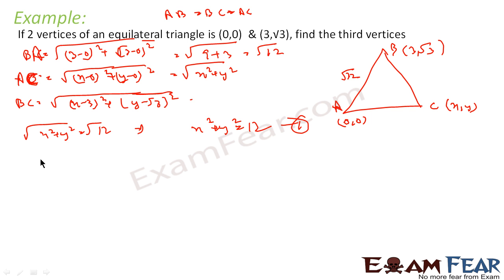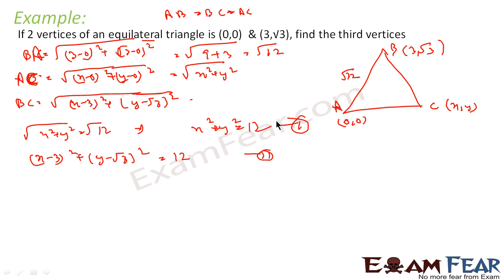The second equation comes from BC² = BA², that is (X−3)² + (Y−√3)² = 12. So I have two equations in terms of X and Y, and I solve these to get the answer.